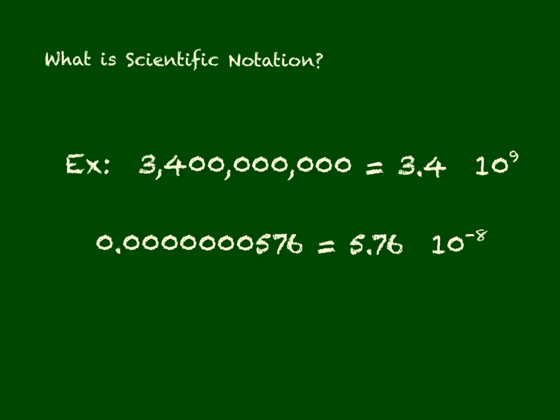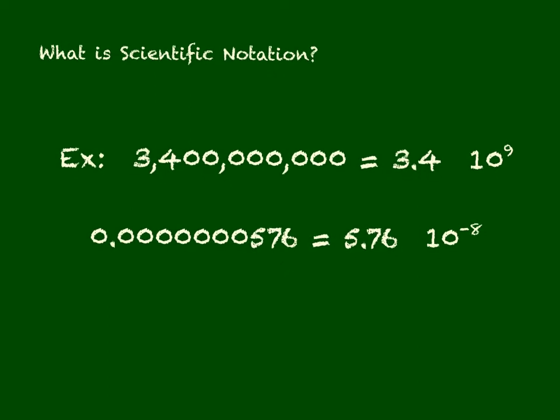If we look at the two examples of scientific notation, you'll see here we have 3,400,000,000 and we write that with the base number and then times 10 to the power. So anytime we're writing scientific notation you're going to see a number that is between 1 and 10. It's going to have to be less than 10 but it's going to have to be 1 or greater in order to write it in scientific notation.